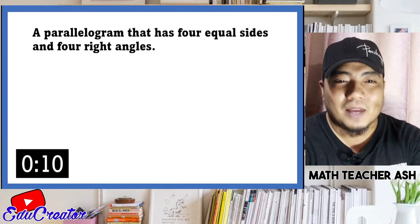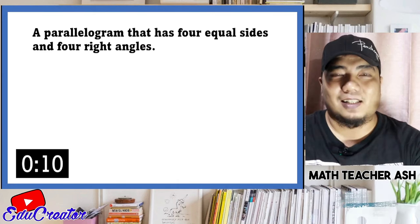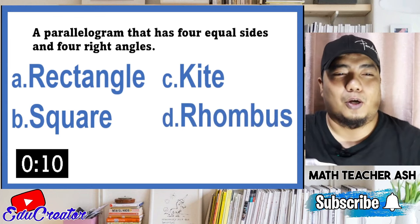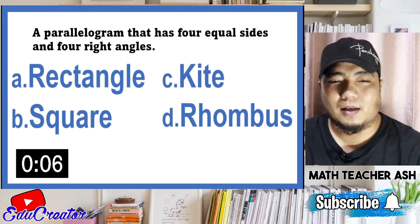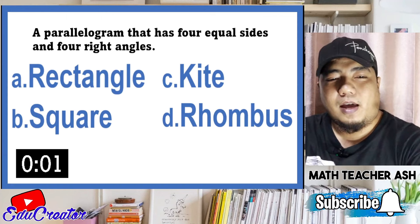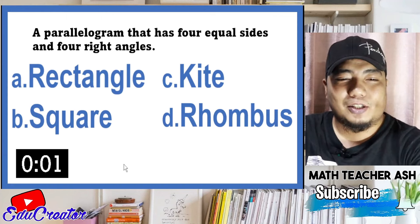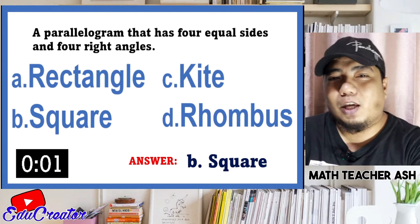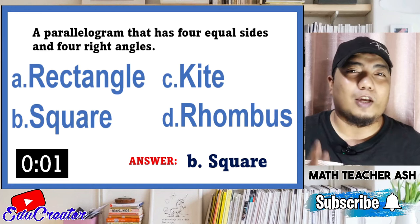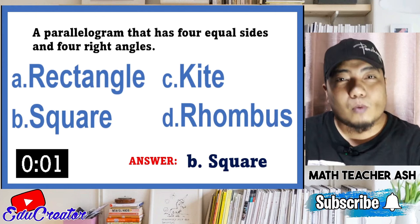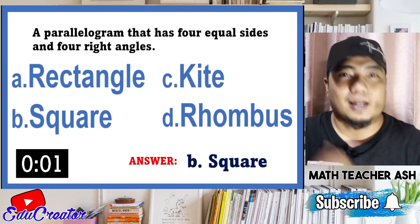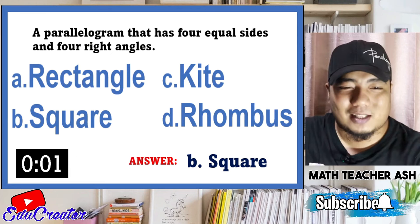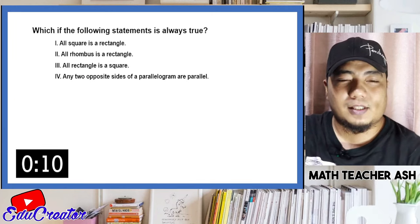Here is the first question: a parallelogram that has four equal sides and four right angles — what do you call that one? Is it A rectangle, B square, C kite, or D rhombus? The correct answer is letter B, square. By definition, a square has four equal sides and four right angles. If it is only focused on four equal sides, that is a rhombus. If it is focused only on four right angles, that is a rectangle. But combining them — four equal sides and four right angles — you have a square.